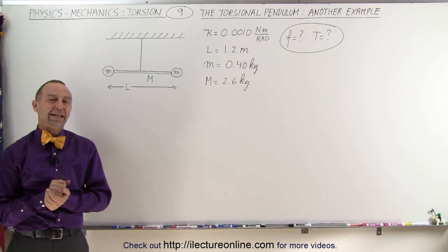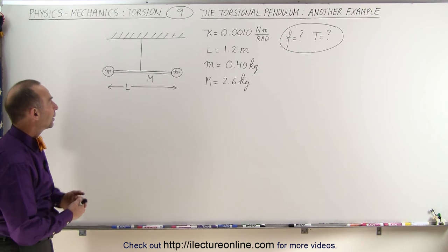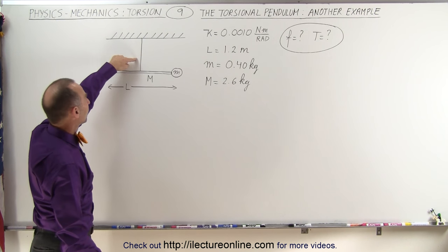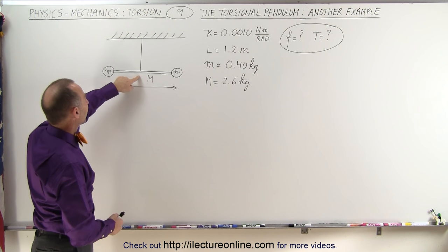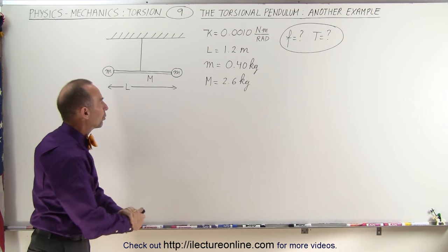Welcome to ElectronLine. Let's do another example of a torsional pendulum. Here we have a string or cable from which is suspended a rod that has two masses at the end of the rod.